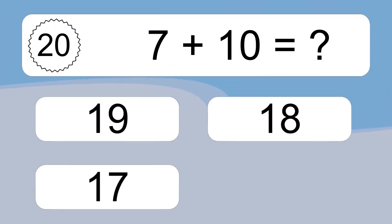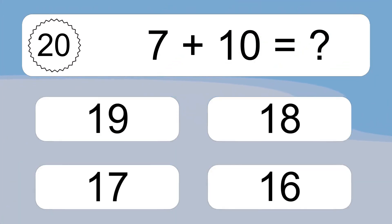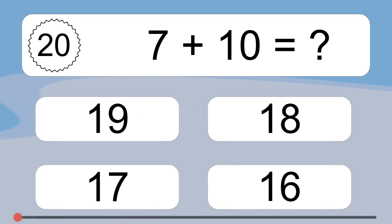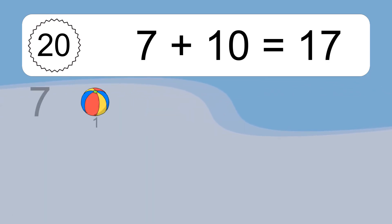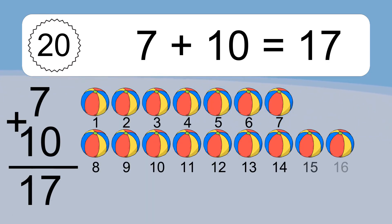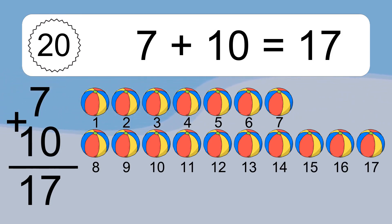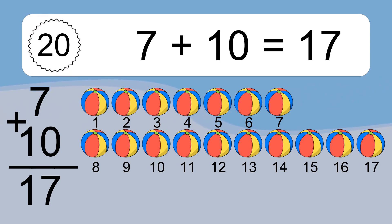7 plus 10 equals what? 7 plus 10 equals 17. Let's count it: 1, 2, 3, 4, 5, 6, 7, 8, 9, 10, 11, 12, 13, 14, 15, 16, 17.